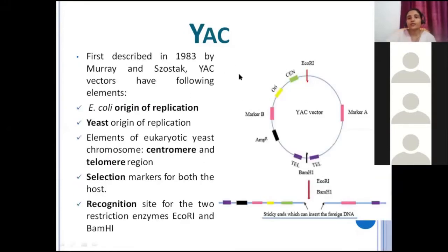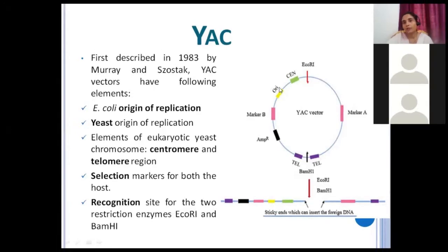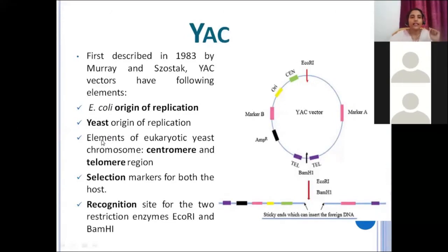Here you can see a typical YAC vector. YAC was first described in 1983 by Murray and Szostak; BAC was studied in the 1990s and came later. YAC vectors have the following elements: it has two origins of replication — one E. coli origin and one yeast origin of replication. Why two origins of replication? Because it is a hybrid of bacterial plasmid and a yeast plasmid, so both of their origins of replication are present.